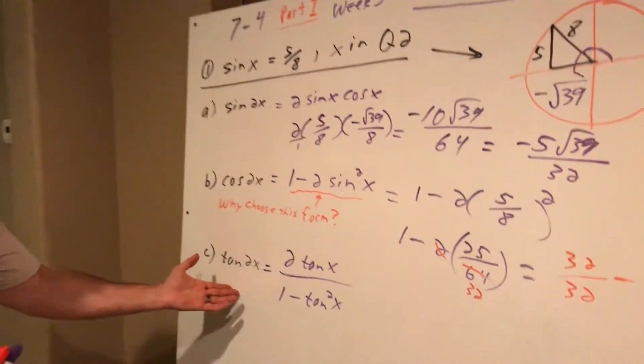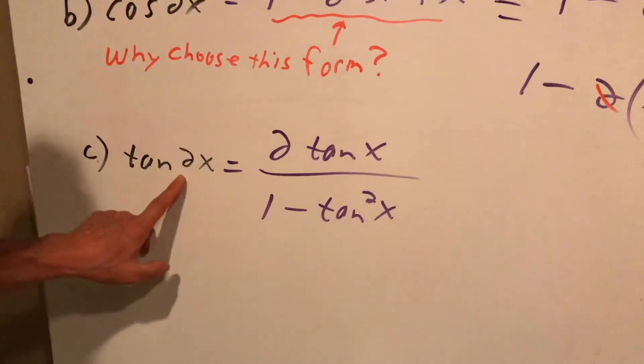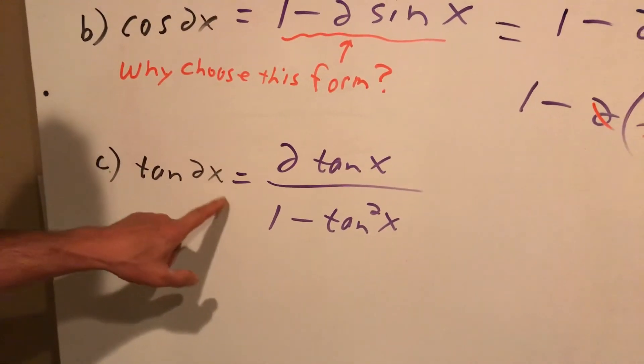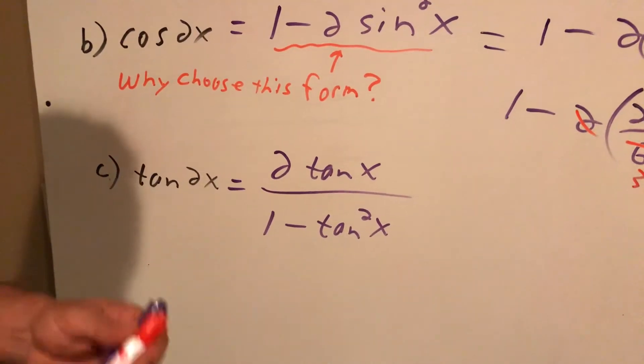Part C. Here we go. Tangent of 2x. Again, there's only one choice for the formula. So I'm just plugging in these values. I want to know what tangent of twice this angle is. But I can use it using the double angle formula by using just the angle that I do have.